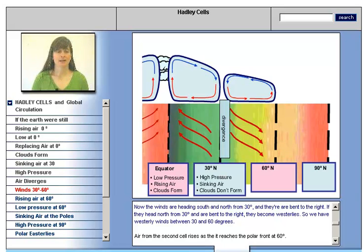Now the winds are heading south and north from 30 degrees, and they're bent to the right. If they head north from 30 degrees and are bent to the right, they become westerlies. So we have westerly winds between 30 and 60 degrees.